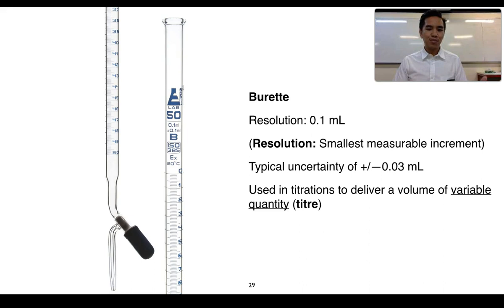The next piece of equipment is a burette. We say it has a resolution of 0.1 mL. So resolution refers to the smallest measurable increment by that piece of glassware or device or piece of equipment. So looking at our burette here we can see that there are graduations or increments of 0.1 so going from 0 to 1 here but we have 10 smaller increments going from 0 to 1. Burettes have a typical uncertainty of 0.03 mL give or take but again it depends on the quality of the glassware. The one in this image here we can see has an uncertainty of give or take 0.1 mL so perhaps not of as high quality in this case. We often use burettes in titrations to deliver a volume of variable quantity and this variable quantity or volume we call our titer.